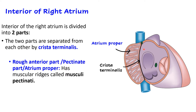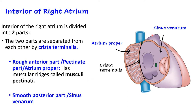The two parts of the interior are: first, the rough anterior part, also known as the pectinate part or atrium proper, which has numerous muscular ridges known as musculi pectinati — it is called atrium proper because of its embryological origin. Second is the smooth part, also known as the sinus venarum — again this name reflects its embryological origin.